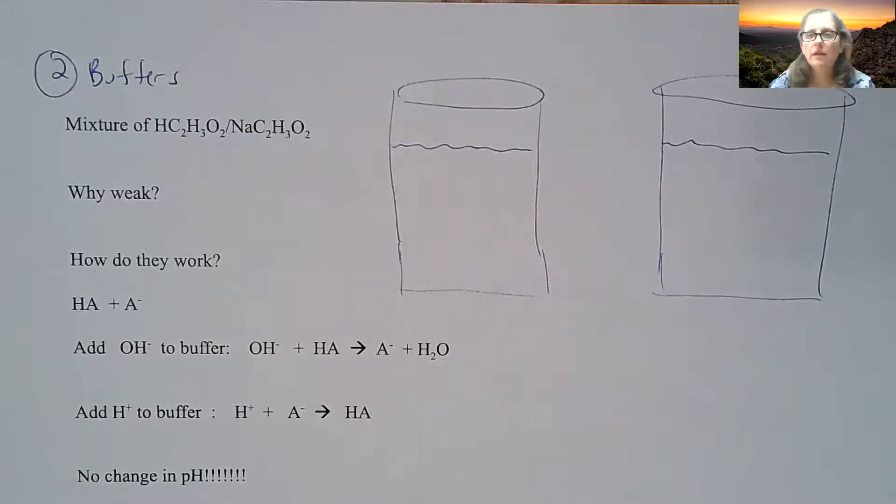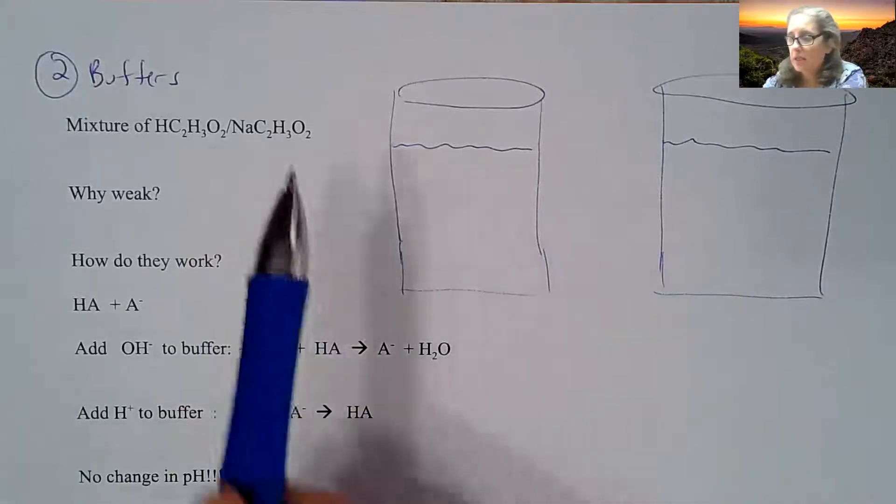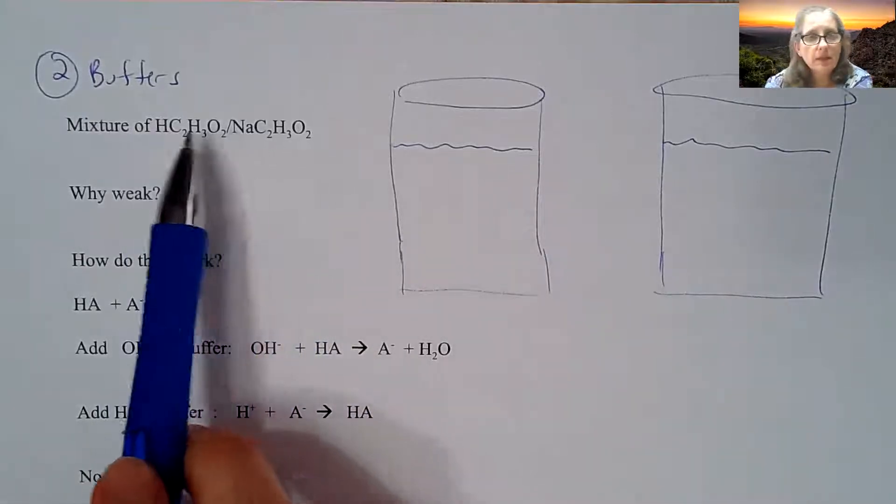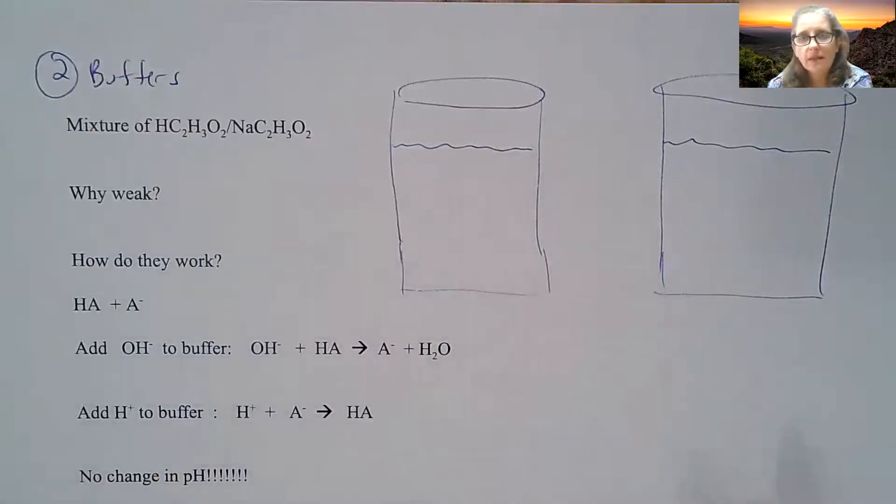We're going to continue talking about buffers in this section. The second topic that chapter 17 has is buffers. We're going to look at if we mix two things together, like a weak acid and a salt, what does that look like in the beaker?